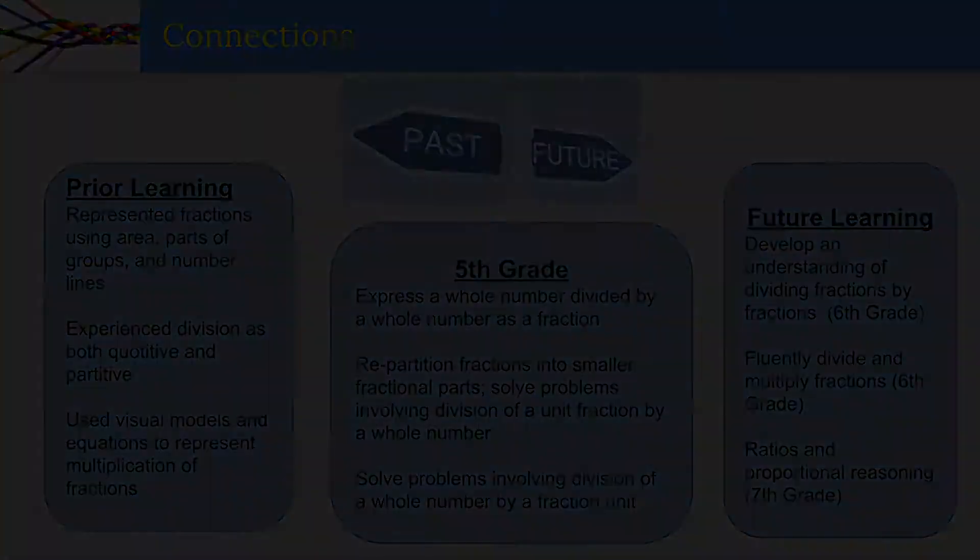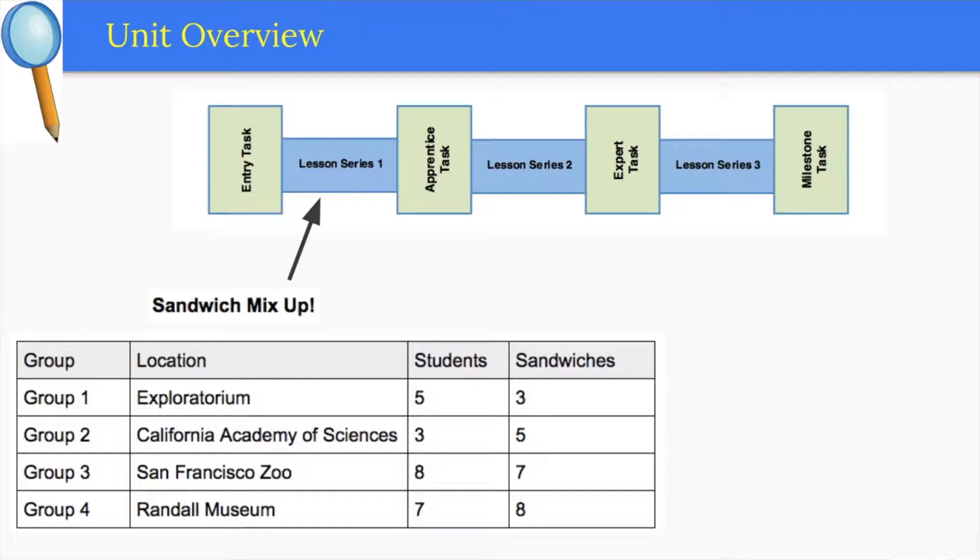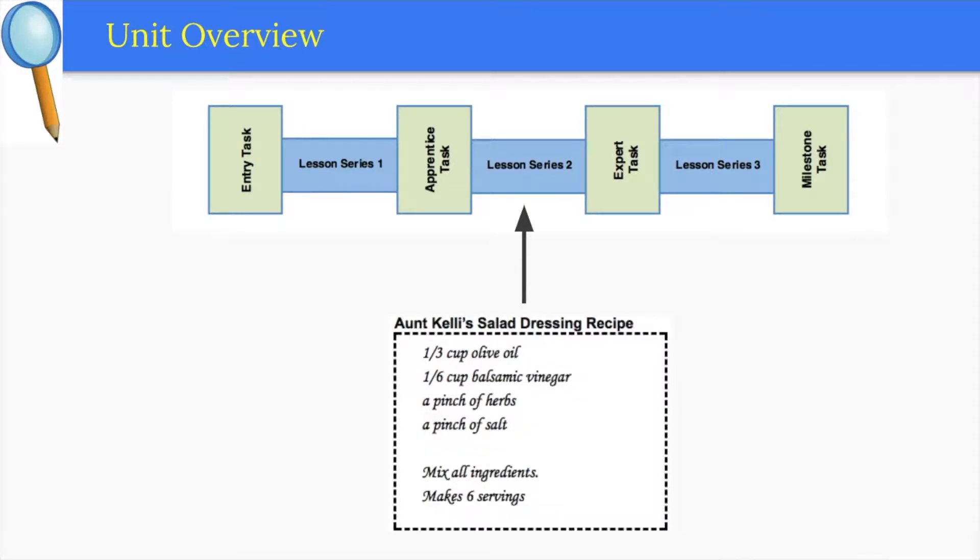Students start this unit by solving problems involving division of sandwiches among students and continue to recognize patterns that show the relationship between fractions and division. Students extend their understanding of fractions as division by using the inverse operation to check their work. Then students explore division of unit fractions by whole numbers using partitive sharing model in the context of making salad dressing and running a relay race.